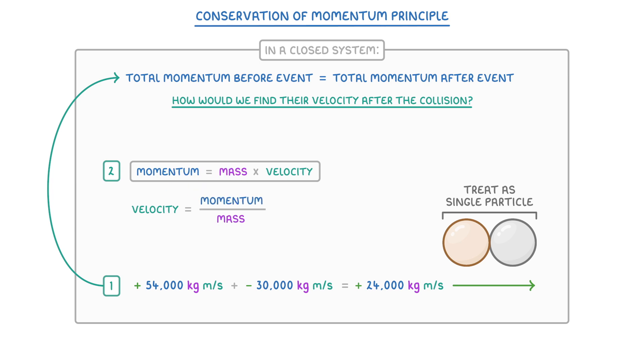And then plug in the values for this combined particle. So 24,000 divided by their combined masses from before, which would be 4,500 for the dinosaur plus 1,200 for the car, so 5,700 kilos, which gives us a velocity of 4.4 m per second to the right.